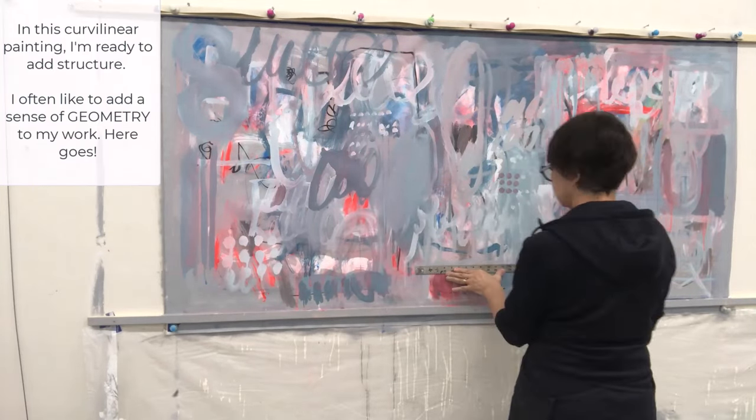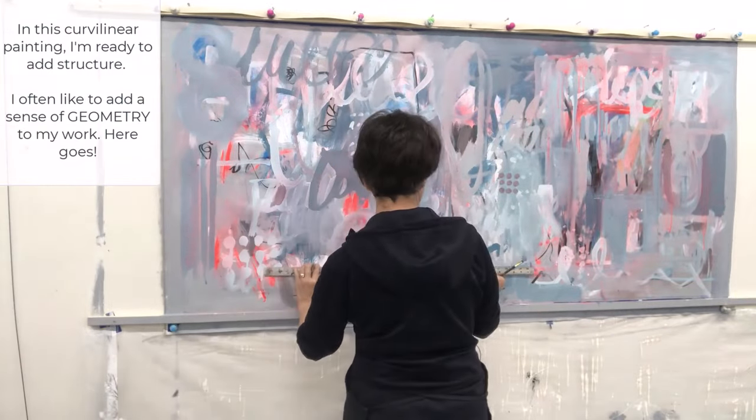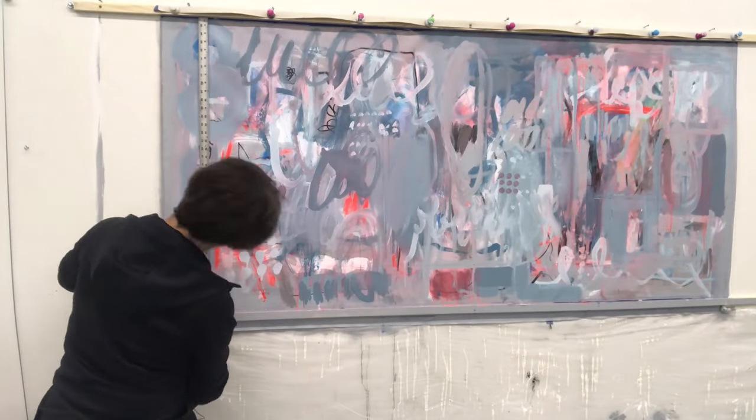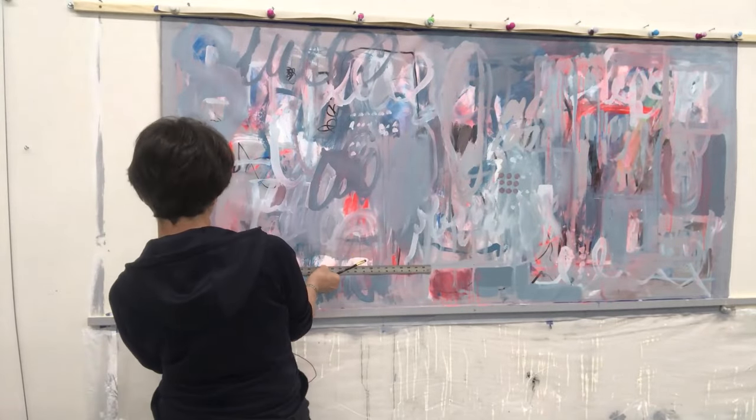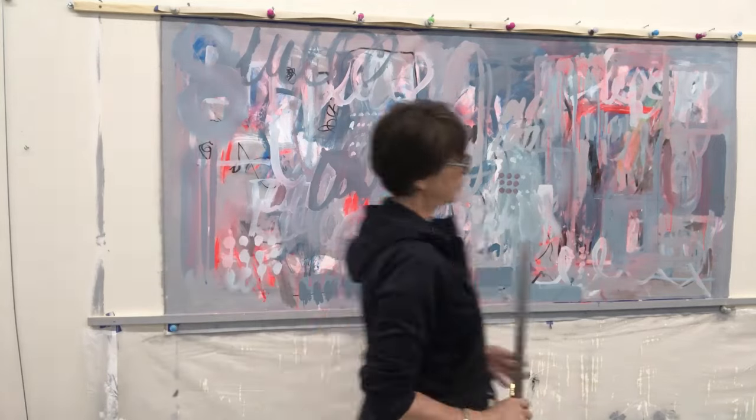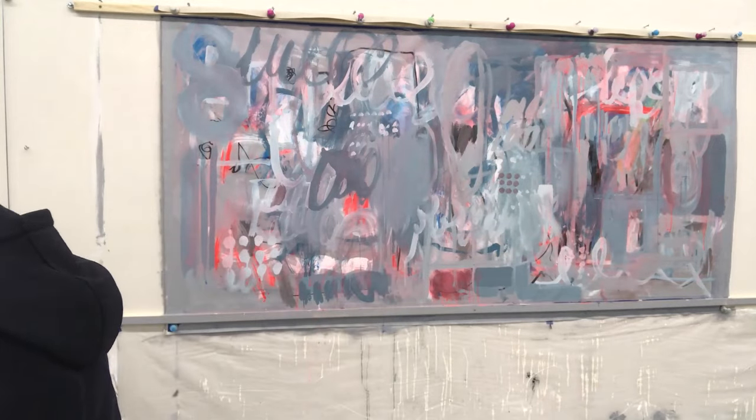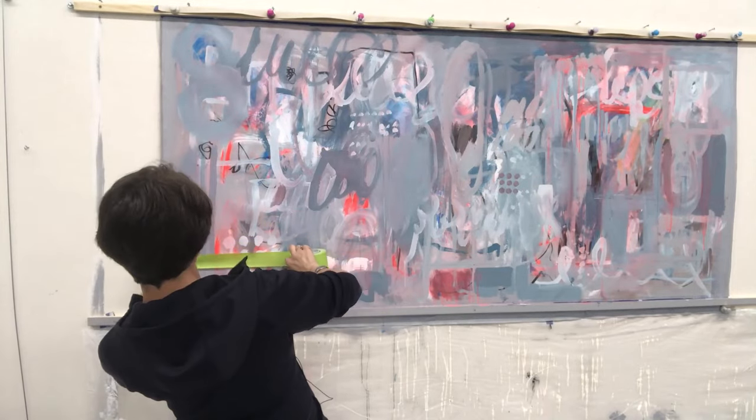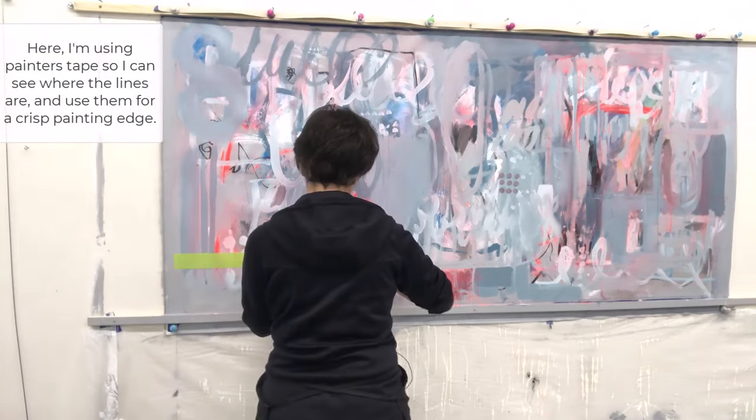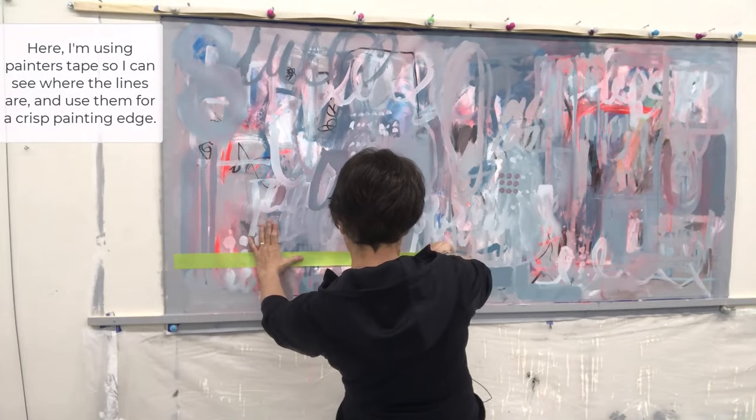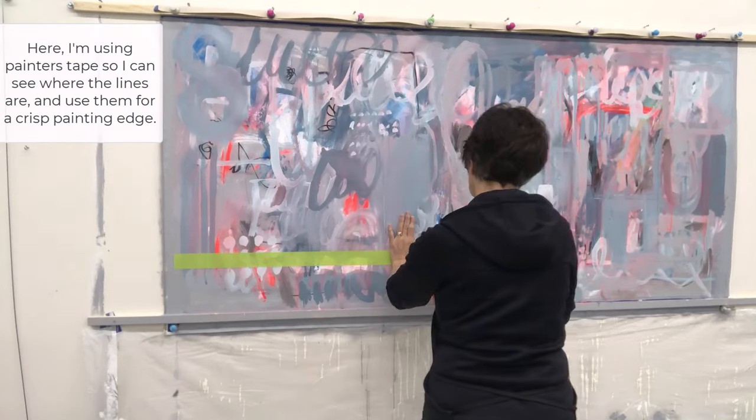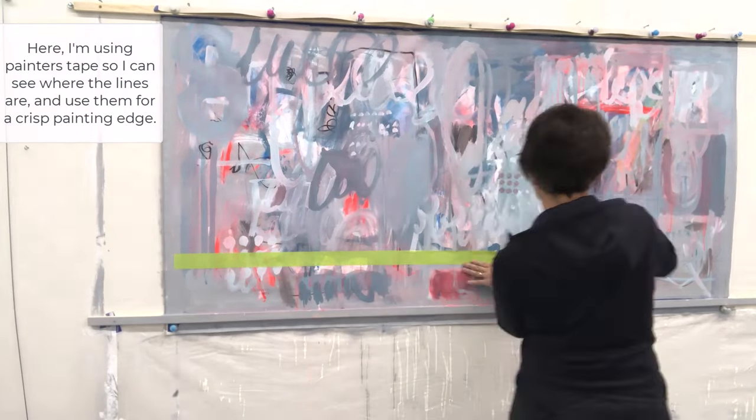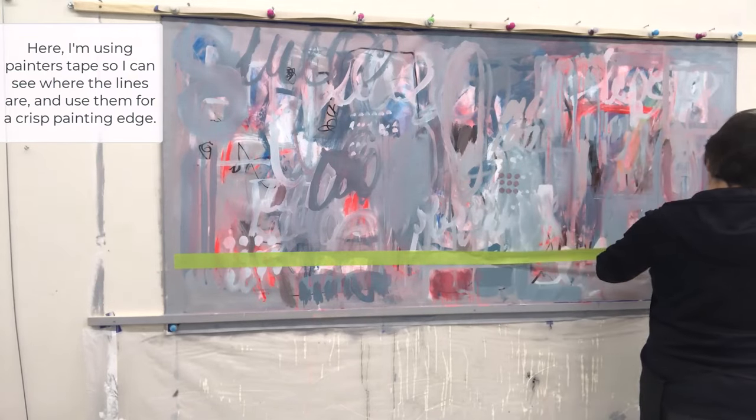This painting is mostly curvilinear, but I like to add structure. So I've got my yardstick here and I'm starting to draw lines into it, dividing the canvas up into basically layers. I have a kind of vague plan. I don't know if I'm going to stay with it, but for now I'm going to add some tape here. What I'd like to do is get a really crisp edge.